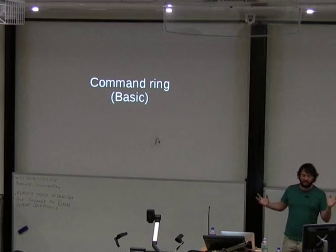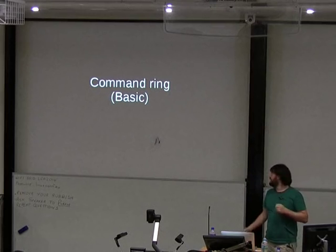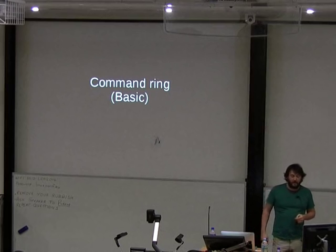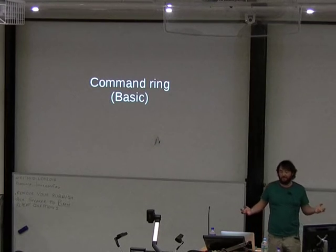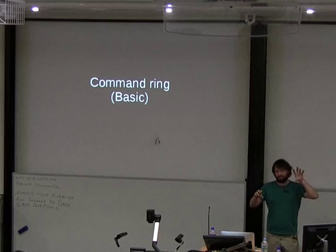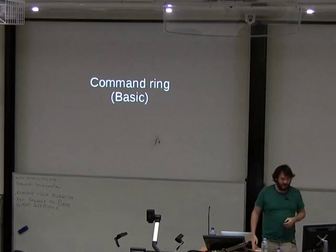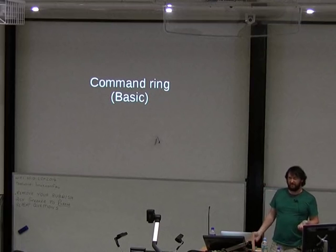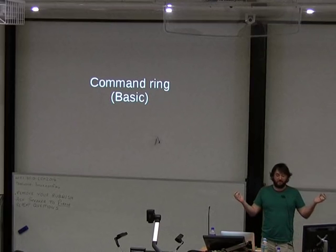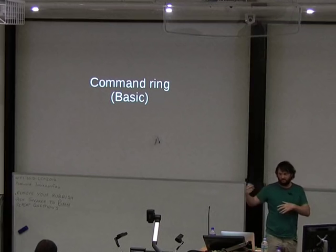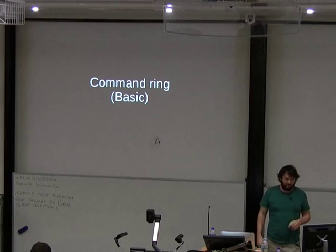The command ring gets stuff sent in the first queue. The first command is get_display_info — for getting back what's connected, so for multi-head it tells you the size of each screen. There's a get_capabilities command, which is basically asking what features you can support — it's at a higher level than the low-level features flags.